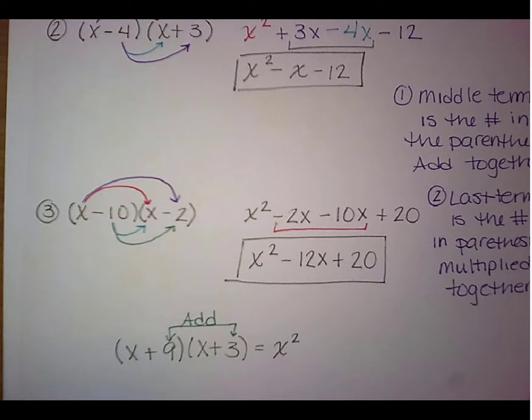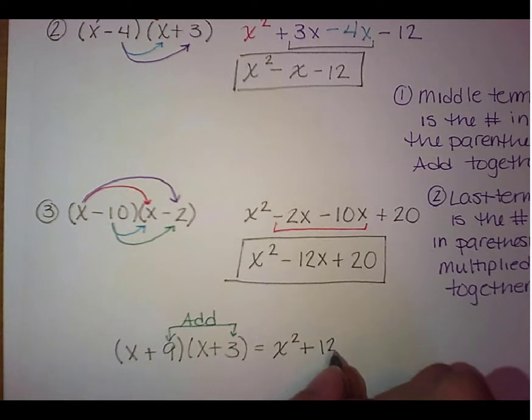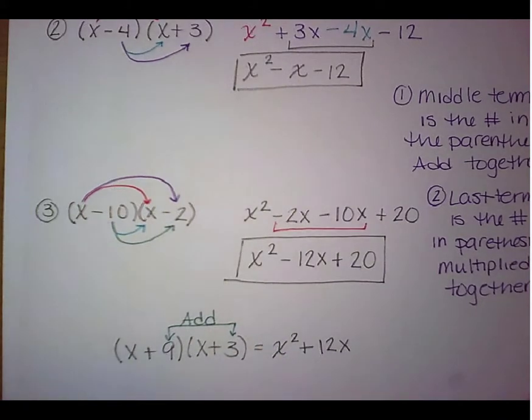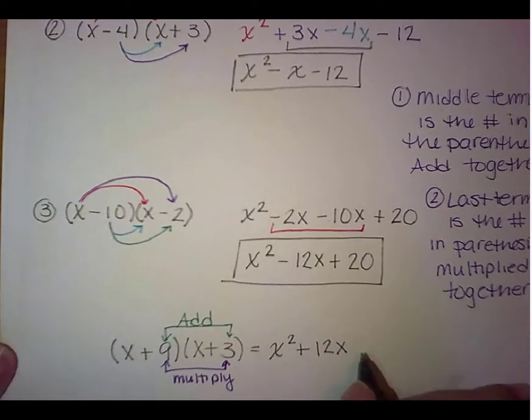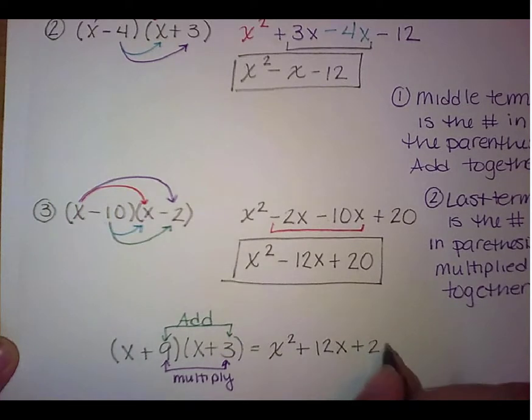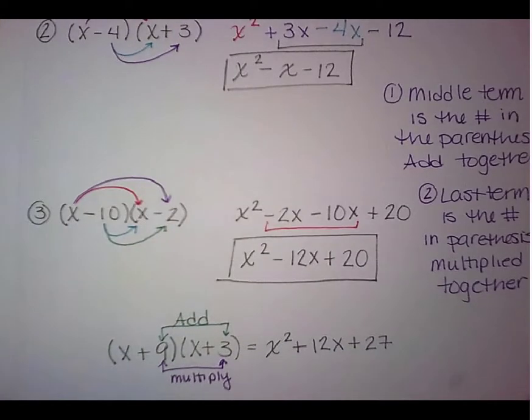So we say okay well 9 plus 3 is 12, so that's going to be plus 12x. And then for our last term we're going to take those same two numbers 9 and 3 and we're going to multiply them together, and when you multiply them together 9 times 3 is 27, so that's going to be plus 27. And we've just FOILed without actually having to FOIL.